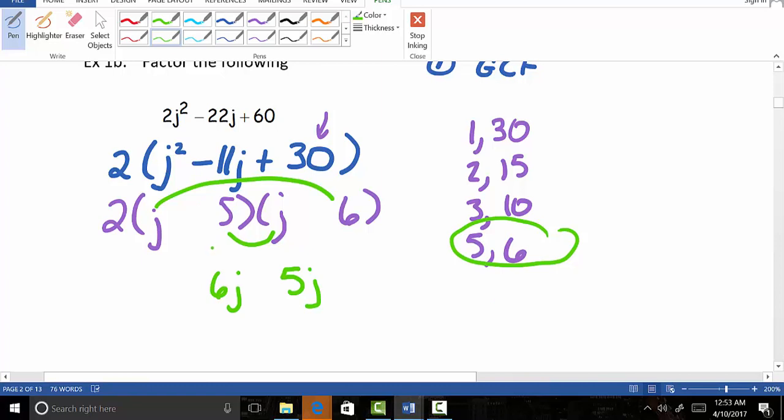Now we have to start playing with just the signs. Well, if we know we want negative 11j, we know that both of these have to combine to give us negative 11j.